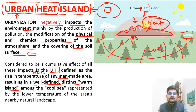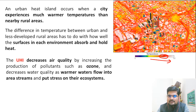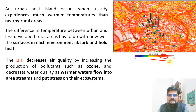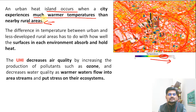This heated-up area surrounded by cool surroundings is why it is called an island of heat — that is the urban heat island concept. As shown in this image, the red zone indicating maximum temperature is found in the built-up areas where there are more urban structures. An urban heat island occurs where a city experiences much warmer temperatures than nearby rural areas — nearby rural areas have lesser temperature and urban areas have more.